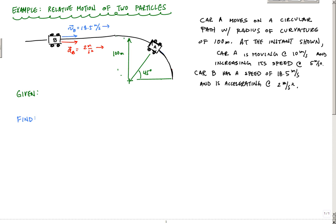In this problem, I have car A moving on a circular path with a radius of curvature of 100 meters, as shown. At this instant, this angle is 45 degrees, and car A is moving at a speed of 10 meters per second. Since velocity is always tangent to the path, that gives us 10 meters per second. Drawing a horizontal line, this angle is 90 degrees, so this must be 45 degrees.